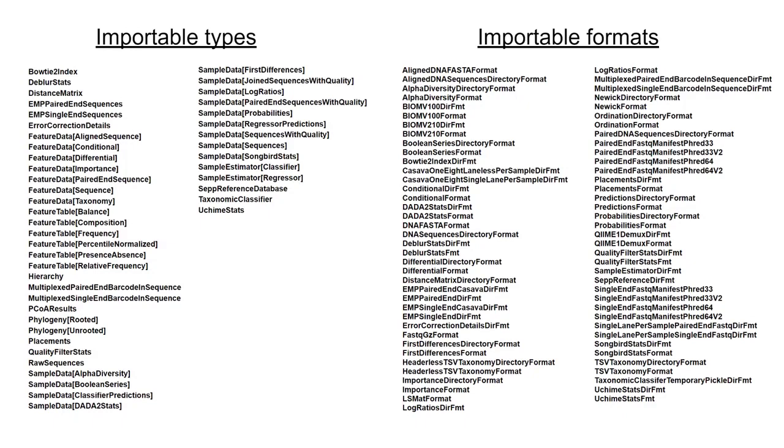And just so you don't think I'm exaggerating when I say there can be hundreds of different data formats, this is a list of 46 importable types and 75 importable formats which my QIIME2 environment currently recognizes. And of course there can be even more depending on if you have any additional third-party plugins, QIIME2 plugins installed.